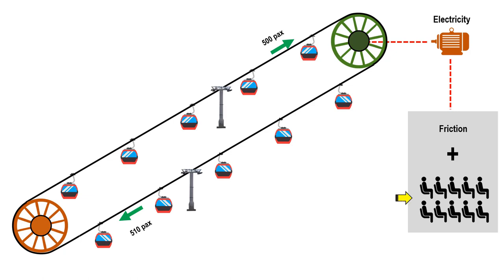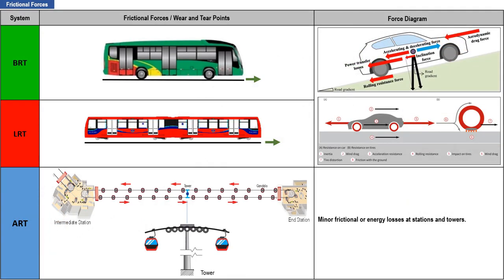CPTs are the only type of mass transportation that can take advantage of the principles of counterbalancing. Let us make a comparative analysis of the frictional forces that occur during the operation of mass transportation systems. The first two sets are for the BRT and LRT traveling along an inclined or flat surface. Where frictional forces occur, they will also be wear and tear points of the components of the transportation systems, which will increase the cost of operation and maintenance.